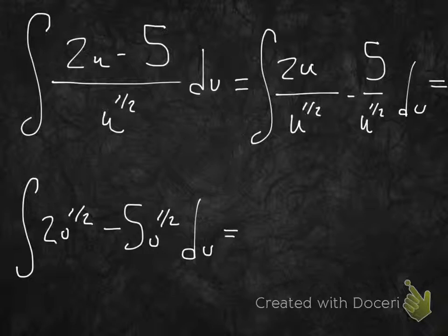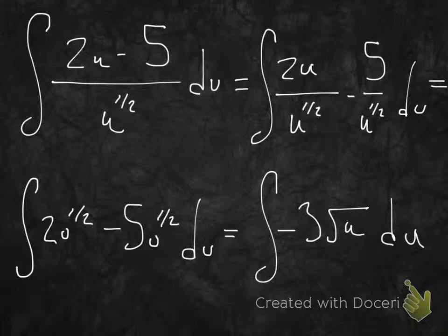This is going to equal, now we can break this up into two separate things. We have a common denominator, so let's break this up. This is equal to 2u over u to the 1 half minus 5 over u to the 1 half du. All we've done is broken it up. That's going to be equal to the indefinite integral of 2u to the 1 half minus 5u to the negative 1 half du. Same exact thing.